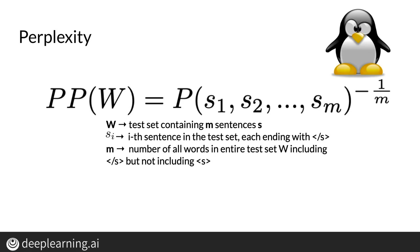Perplexity is used to tell us whether a set of sentences look like they were written by humans rather than by a simple program choosing words at random. A text that is written by humans is more likely to have a lower perplexity score.